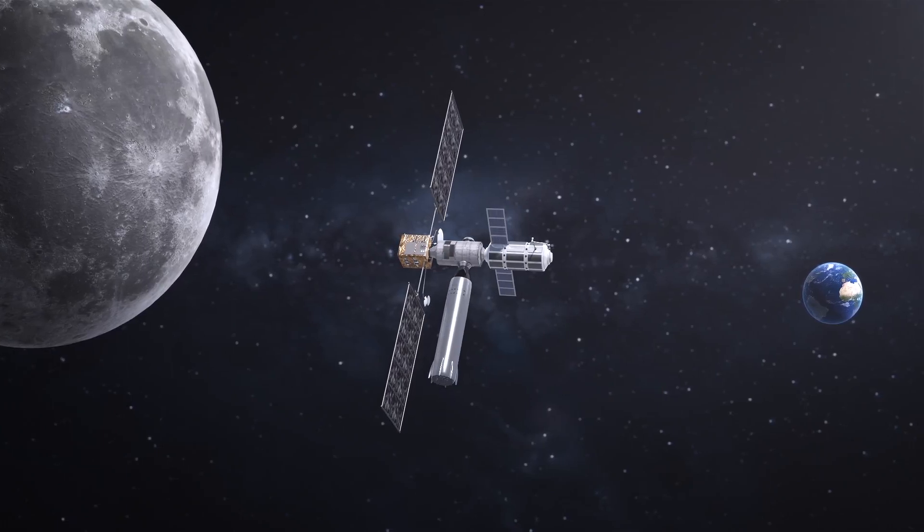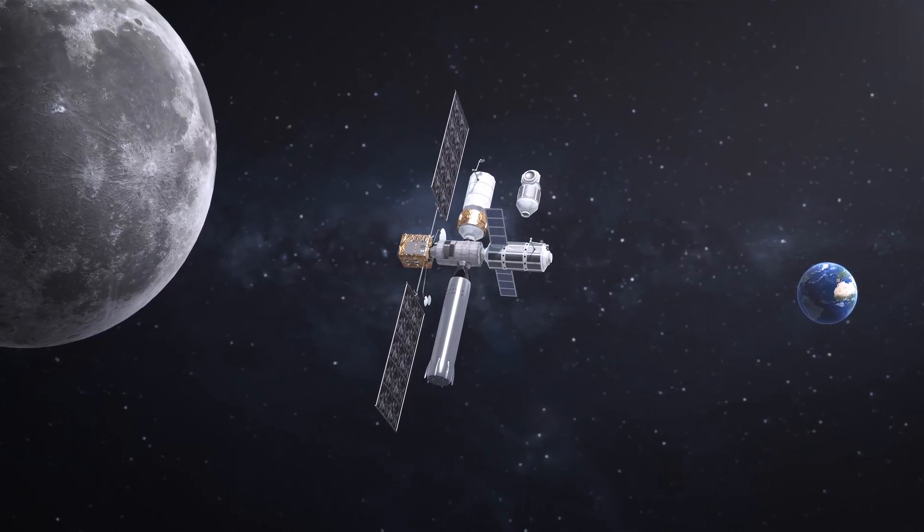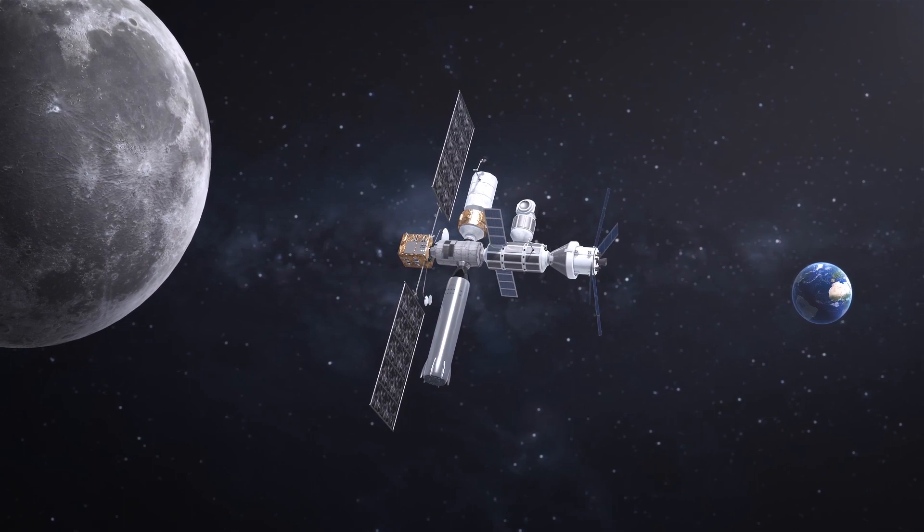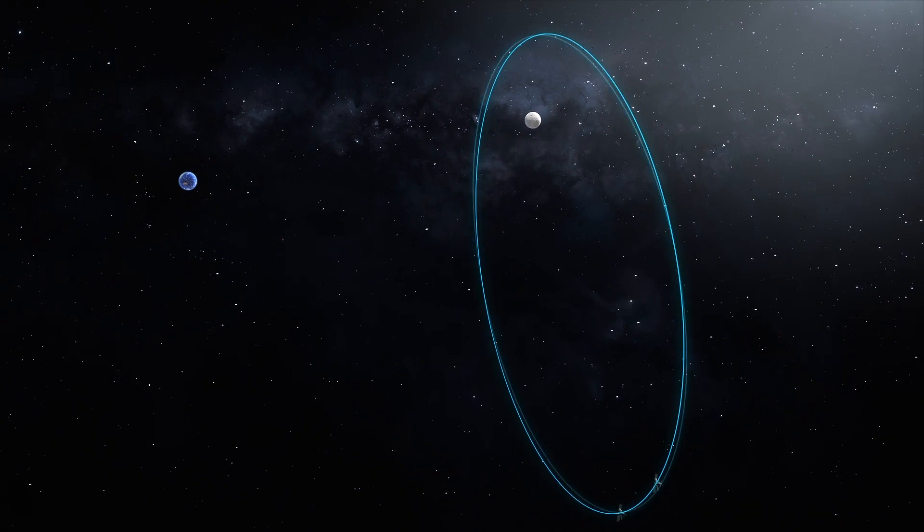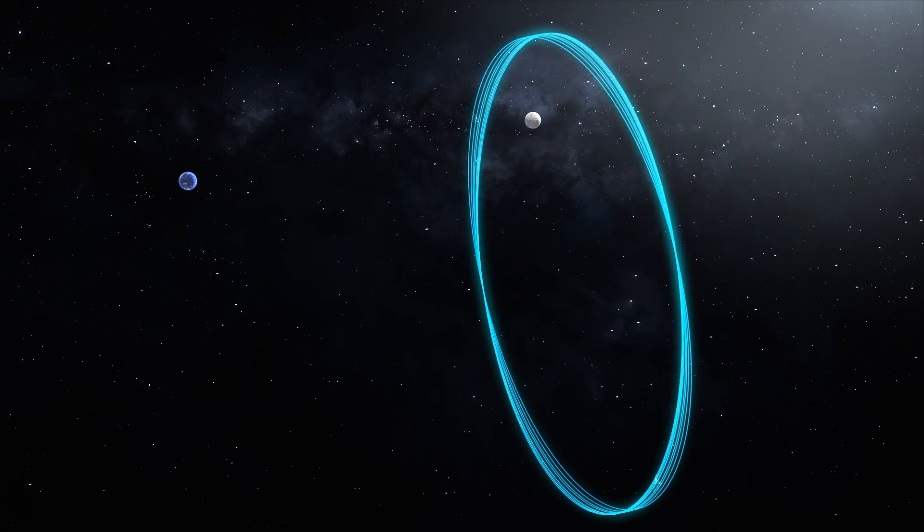NASA has released images of its Lunar Gateway space station ahead of its proposed launch of two modules in 2024. In a statement released on its website, NASA describes the station as an outpost orbiting the moon that provides vital support for a sustainable, long-term human return to the lunar surface.